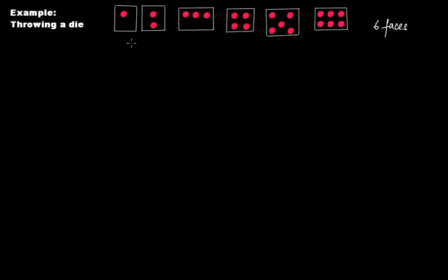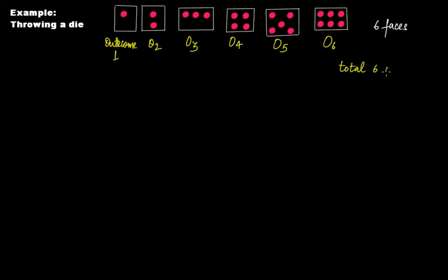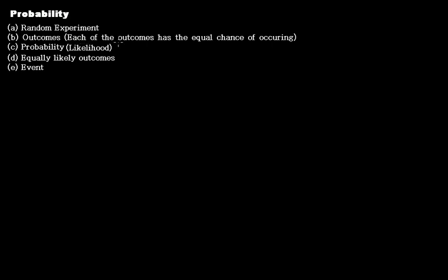For throwing a die, you have six outcomes: outcome one is face one, outcome two is face two, outcome three is face three, outcome four is face four, outcome five is face five, and outcome six is face six. So you have a total of six outcomes.